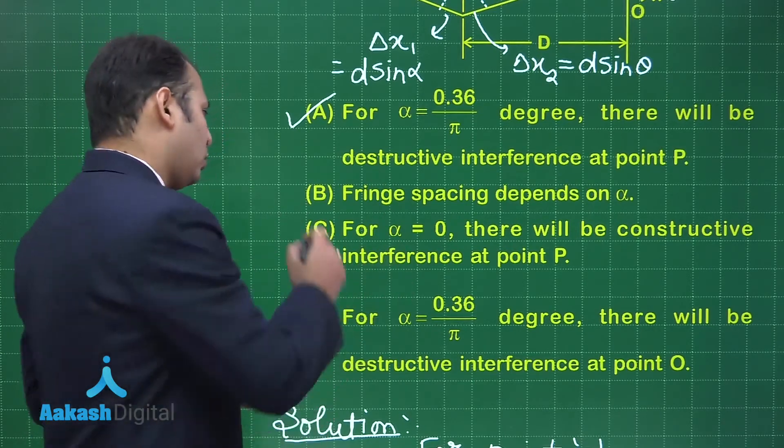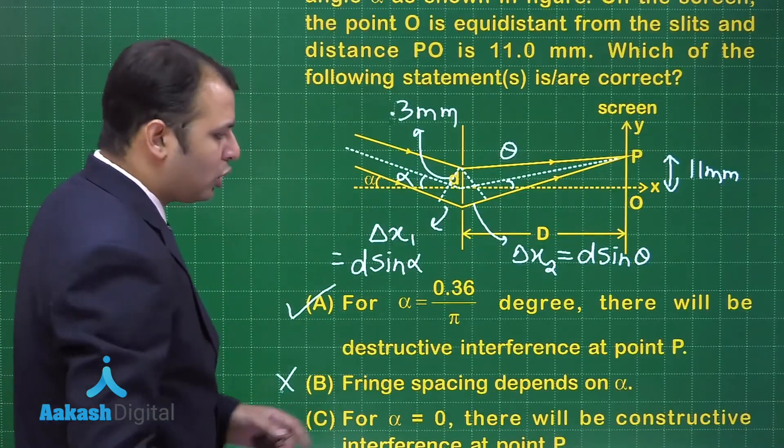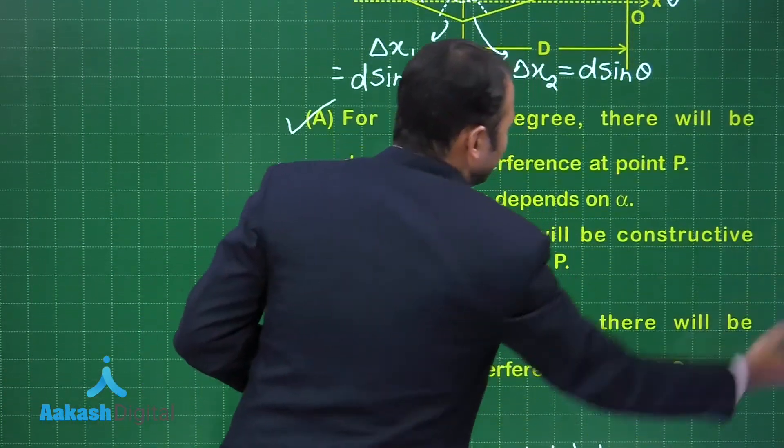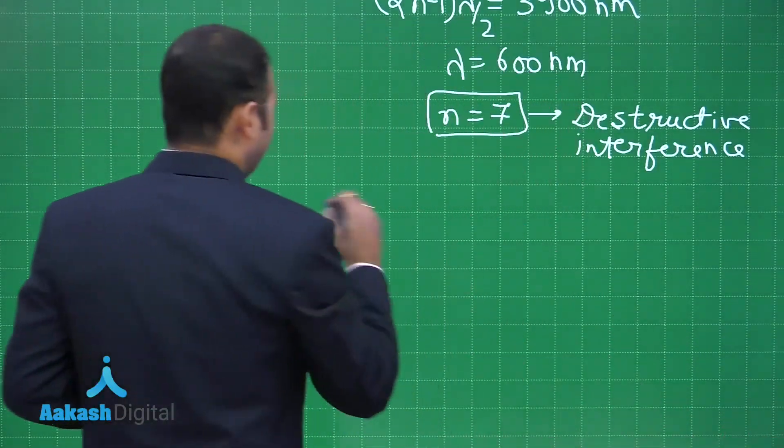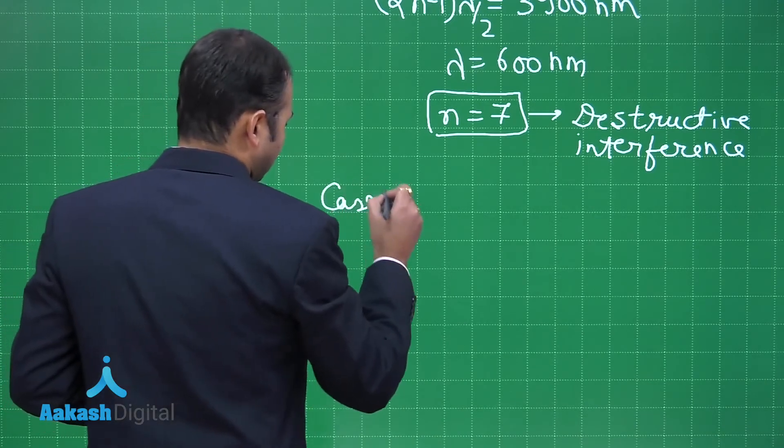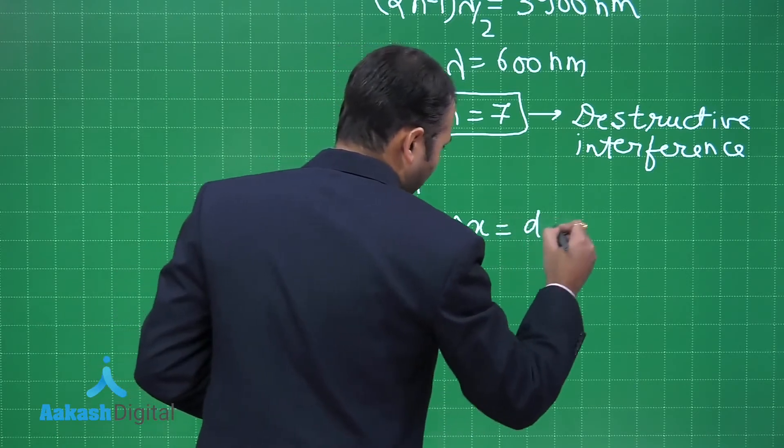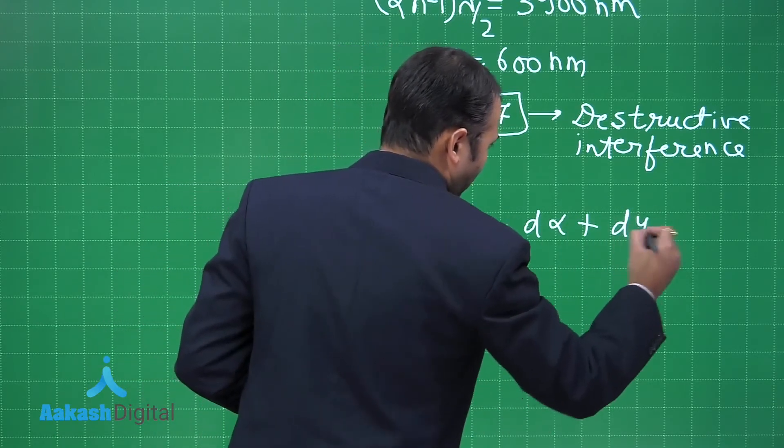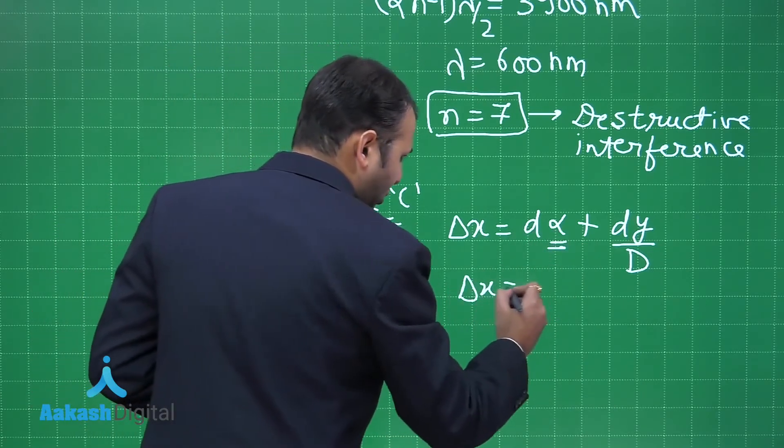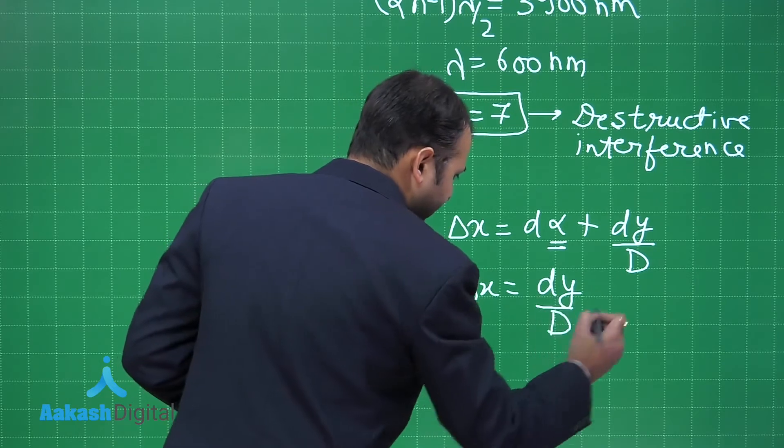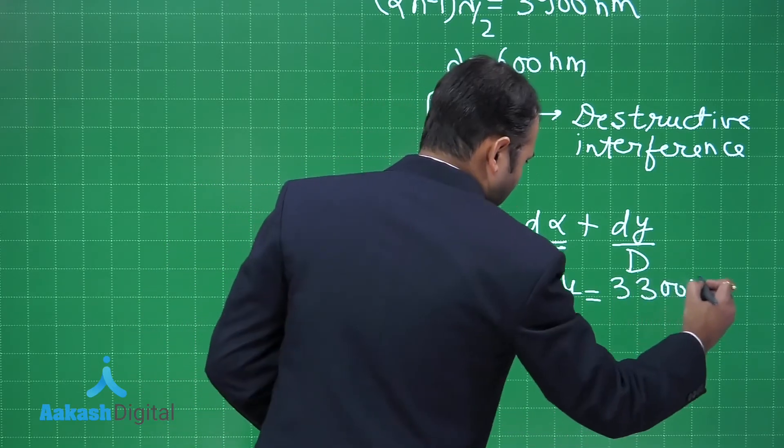Now let's talk about the second one. Fringe spacing depends on alpha - no, it does not depend on alpha. It depends on small d, capital D, and lambda. When you talk about alpha equals 0, in this case, let's put alpha equals 0. For the same formula, case C, delta x was equal to d alpha plus d y by capital D. If alpha becomes 0, delta x will remain only as d y by capital D. That would be 3300 nanometers.